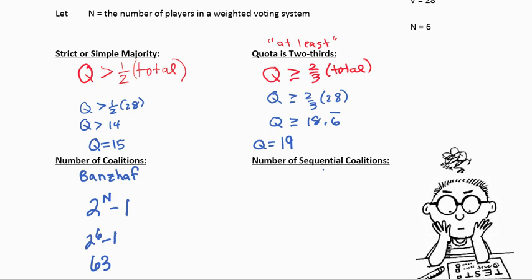And if we're talking about sequential coalitions, that's what we would use for Shapley-Shubik. So, that would be orders of voters. That formula is n factorial, n times n minus 1, times n minus 2, etc. For our problem at the top, that would be 6 factorial, which is 720. You should have these two formulas memorized and to know the difference between them.